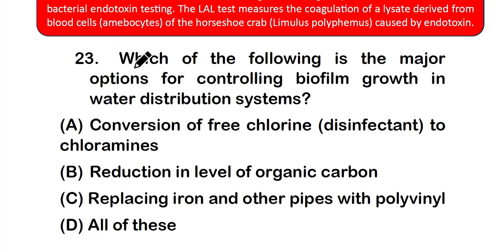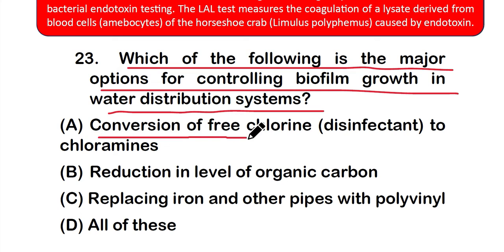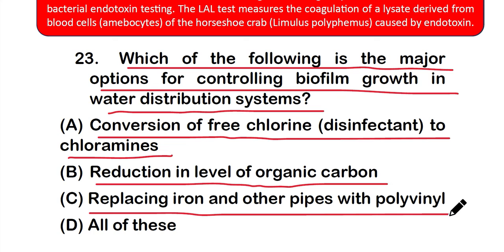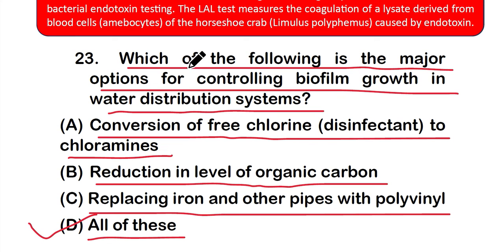Question number 23: Which of the following is the major option for controlling biofilm growth in a water distribution system? Options: A) conversion of free chlorine to chloramine, B) reduction in level of organic carbon, C) replacing iron and other pipes with polyvinyl, or D) all of these. The right answer is option D — all of these are the major options for controlling biofilm growth in a water distribution system.